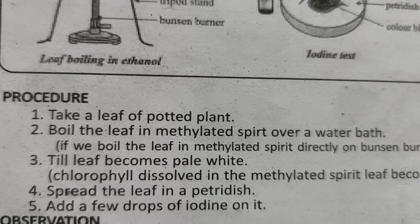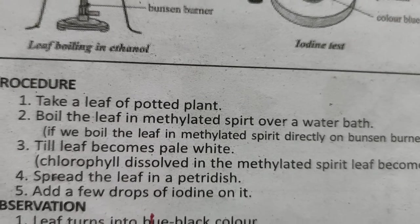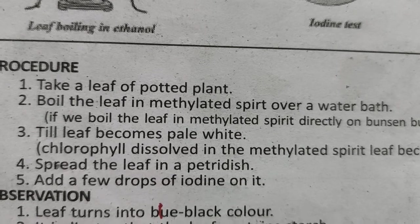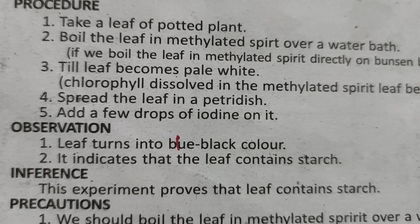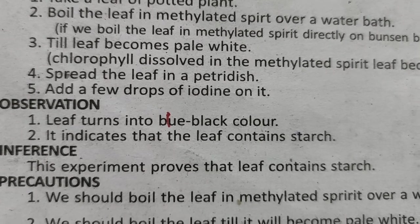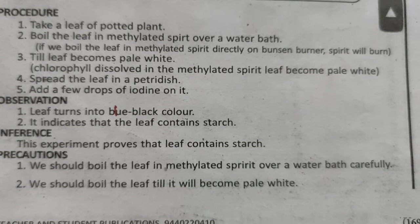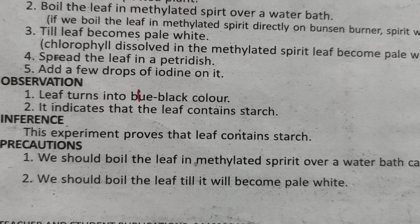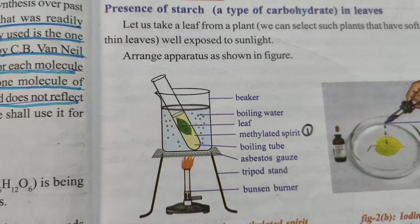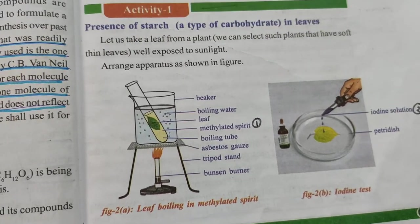Procedure: Take a leaf of a potted plant. Boil the leaf in methylated spirit over a water bath until the leaf becomes pale white, due to removal of chlorophyll. Spread the leaf in a Petri dish. Add a few drops of iodine solution. Observation: The leaf turns blue-black color, indicating that the leaf contains starch. Precaution: Boil the leaf in methylated spirit over a water bath carefully — do not boil the methylated spirit directly as it may explode. Boil the leaf until it becomes pale white.